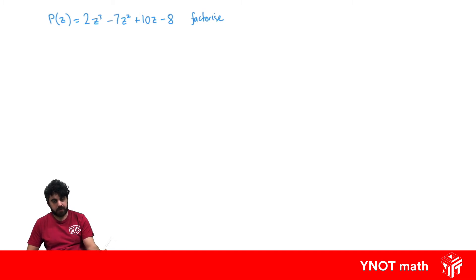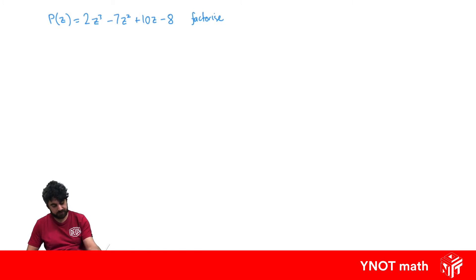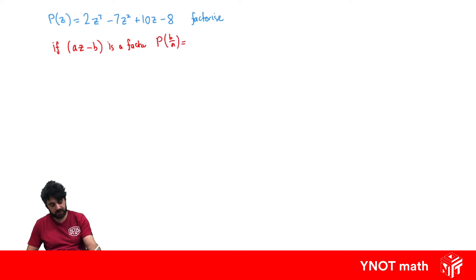The leading coefficient is not 1 here. So when we think about a factor dividing into this polynomial, it won't simply be in the form z minus a. If a times z minus b is a factor, then p of b over a will equal 0. Finding at least one such factor will help us factorize this polynomial.